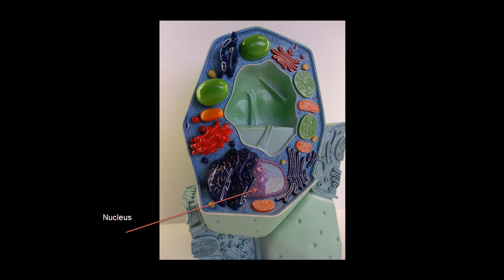And then we're going to look at the nucleolus. Inside of the nucleus is an area here. We can see the small purple ball there. That is called the nucleolus. The nucleolus is where ribosomes are manufactured.